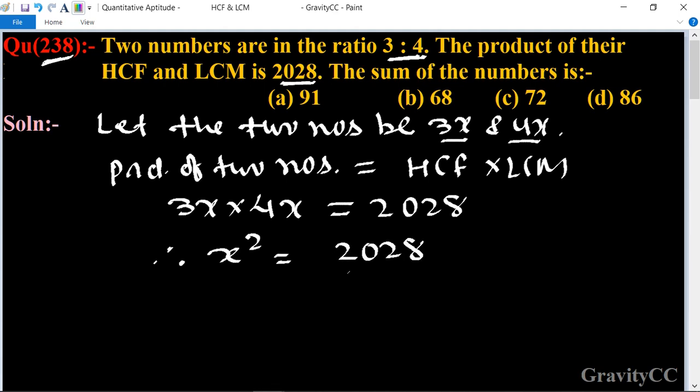2028 divided by 3 times 4. So now we cancel, getting 507 divided by 3, then 169.